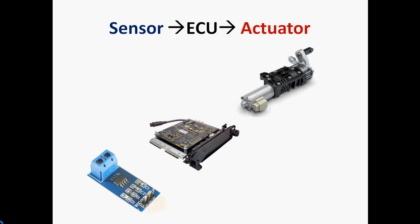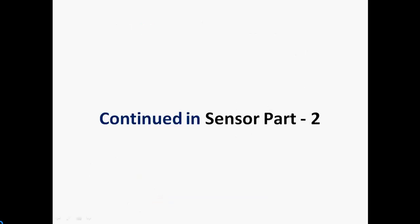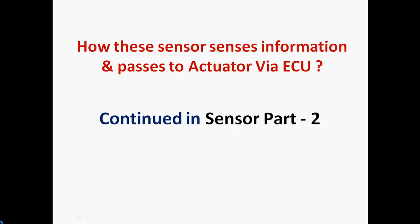This is the overall basic structure of how the sensor, ECU, and actuator work together — and whatever the sensor or operation, this is the structure it follows. In the next part, we'll cover individual sensors — for example, a rain sensor paired with a wiper actuator. If you're interested, hit a like and subscribe. See you in the next tutorial!